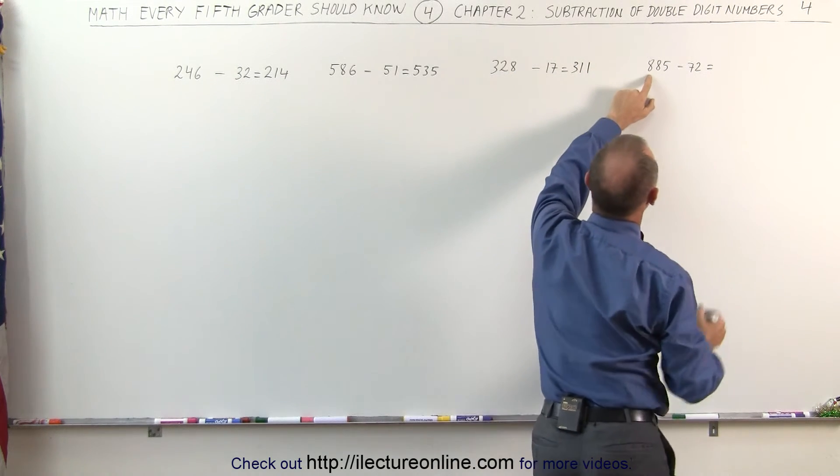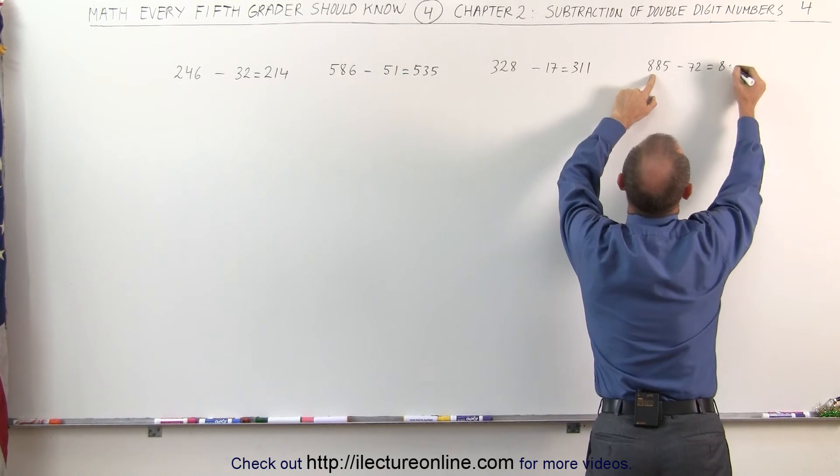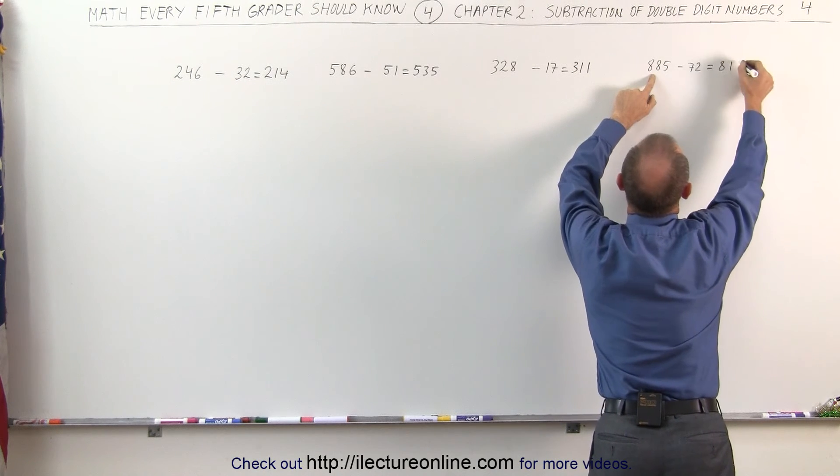And over here, the 8 remains. 7 subtracted from 8 gives me 1, 2 subtracted from 5 gives me 3.